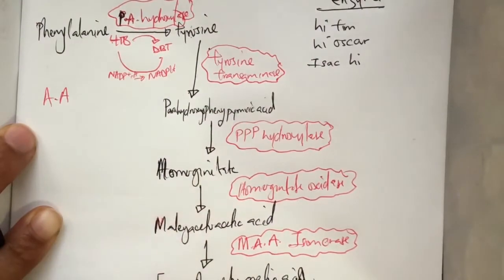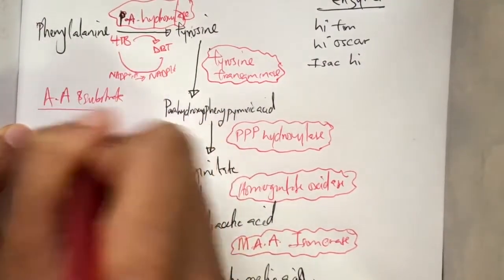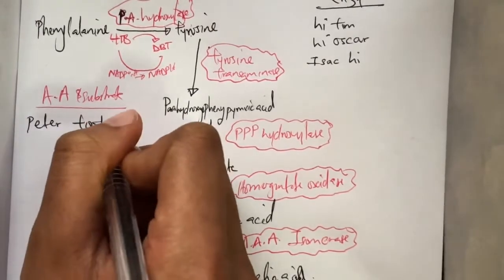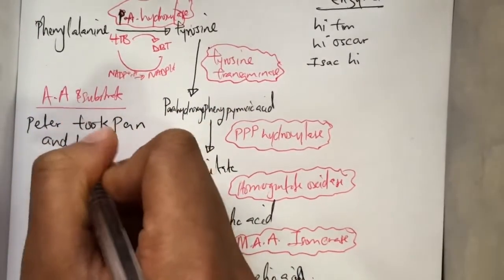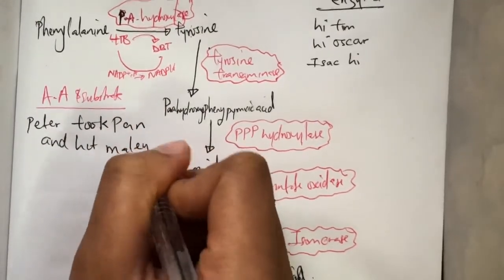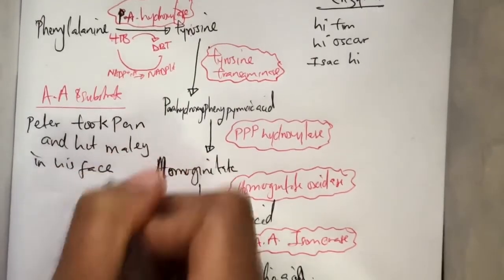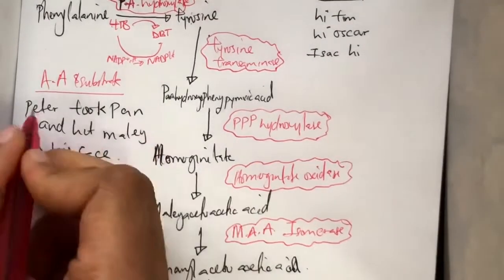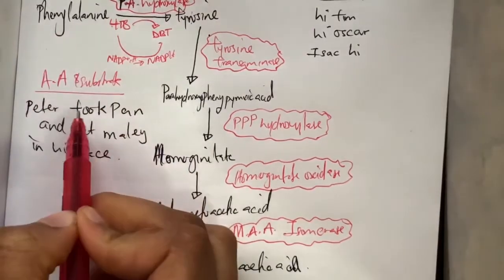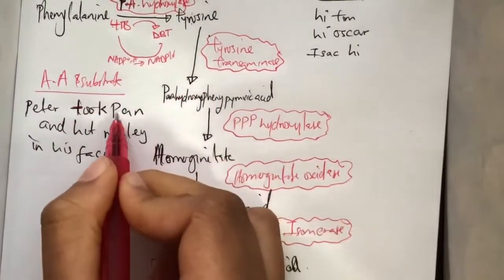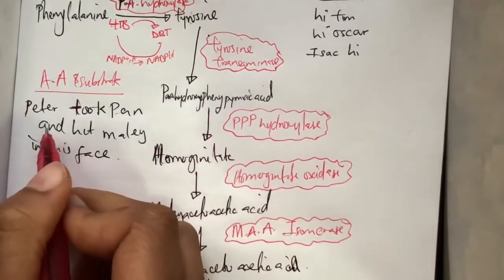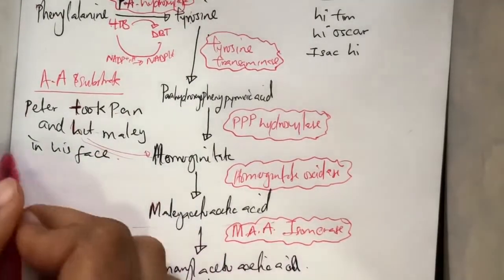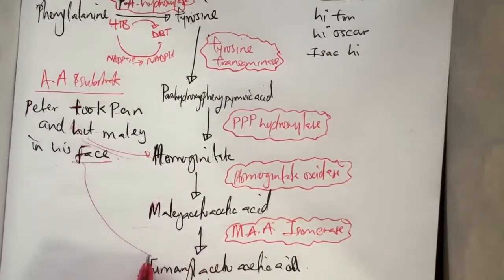And for the amino acid breakdown into different substrates, I have: Peter took pan and hit Mali in his face. So Peter stands for phenylalanine, took for tyrosine, pan for parahydroxyphenylpyruvic acid, and hit H for homogentisate, Mali for maleylacetoacetic acid, in his face, F for fumarylacetoacetic acid.